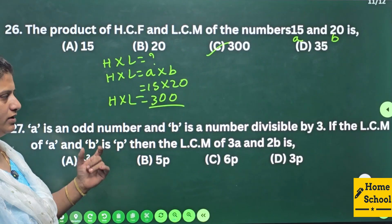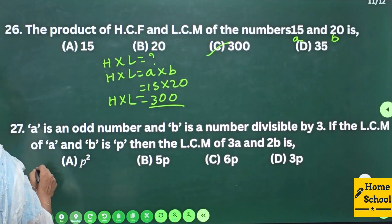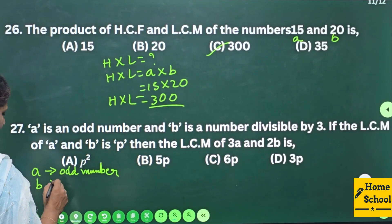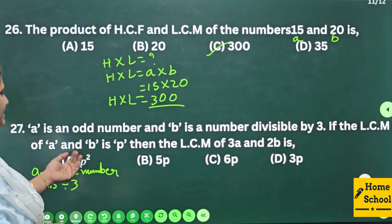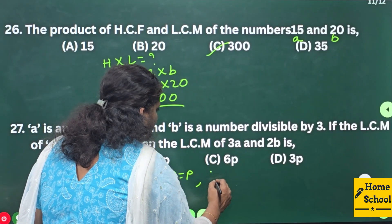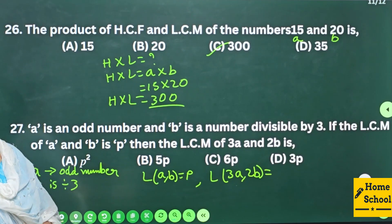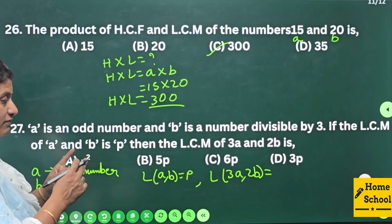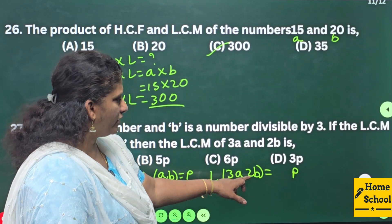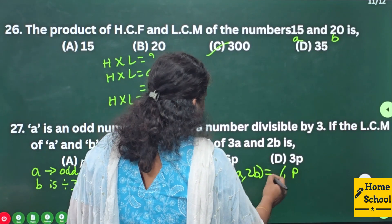Question 27: a is an odd number and b is a number divisible by 3. If the LCM of a and b is p, then the LCM of 3a and 2b is — since a is odd and b is divisible by 3, with LCM(a, b) = p. The LCM of 3 and 2 — since 3 and 2 are prime numbers, their LCM is 6. So your answer is 6p — option C.